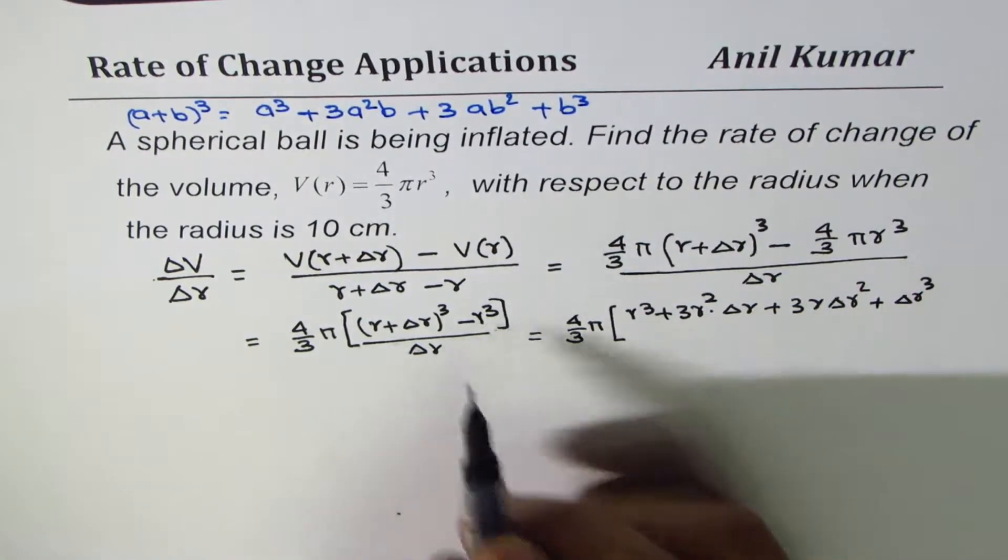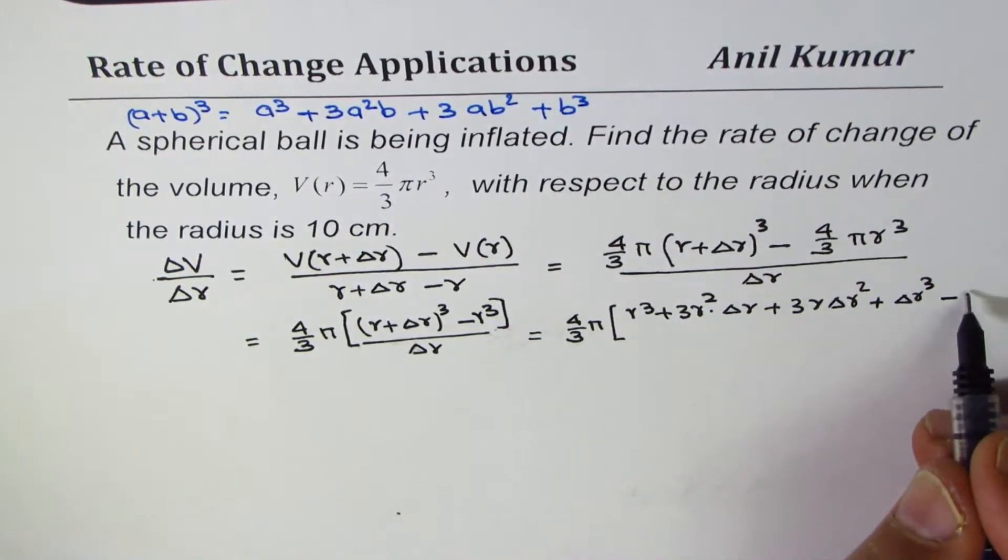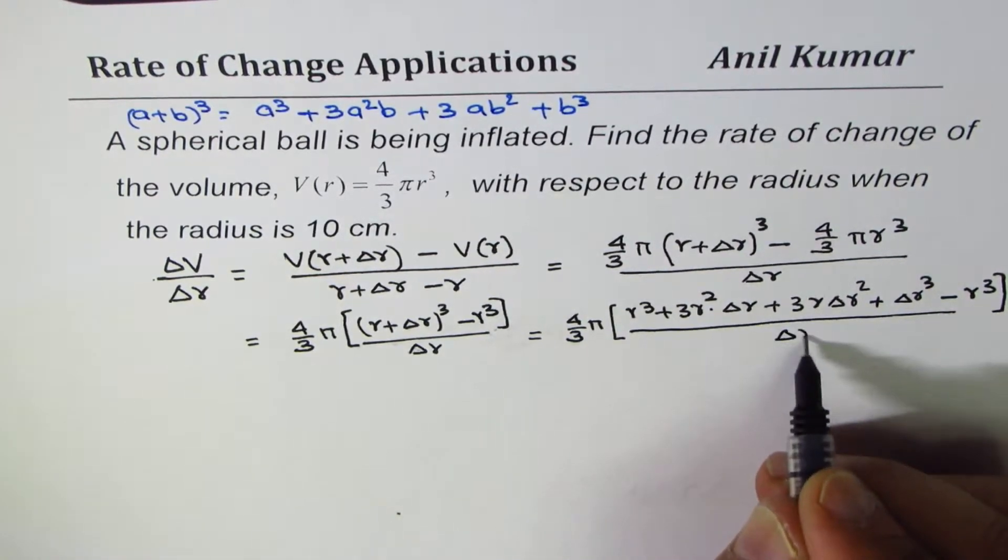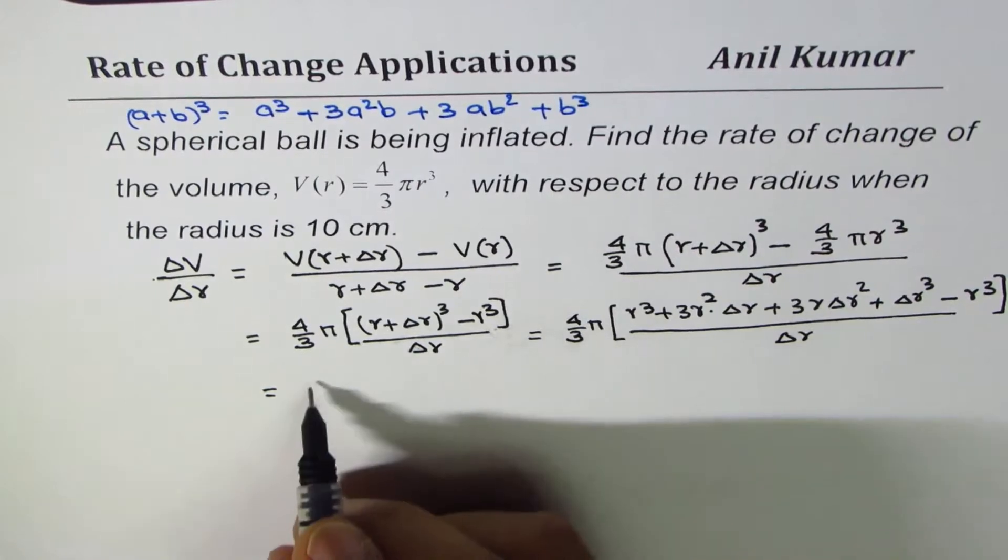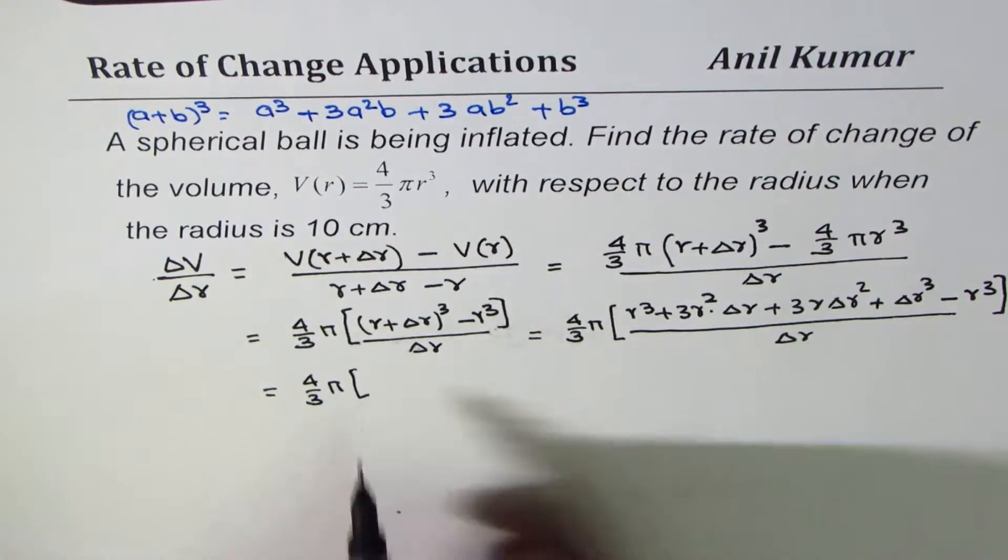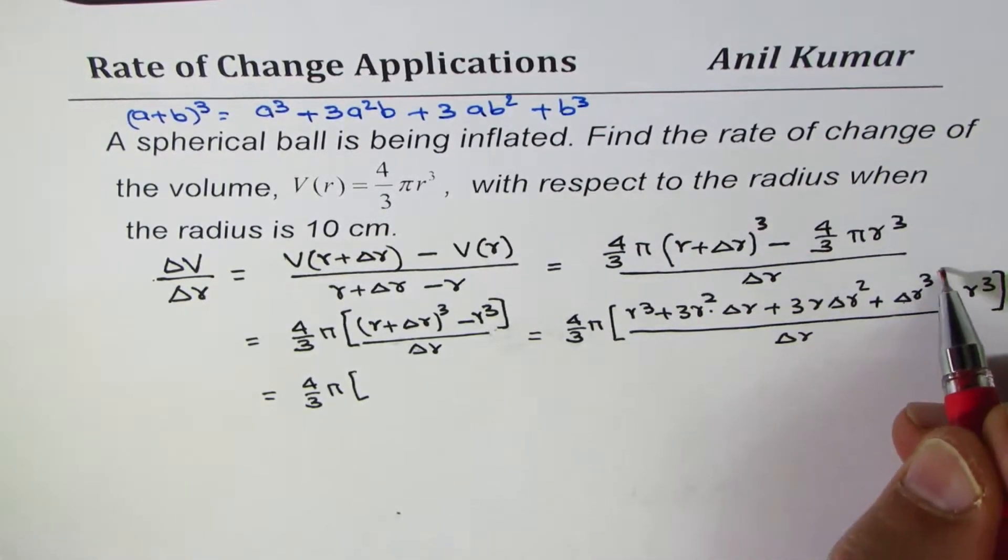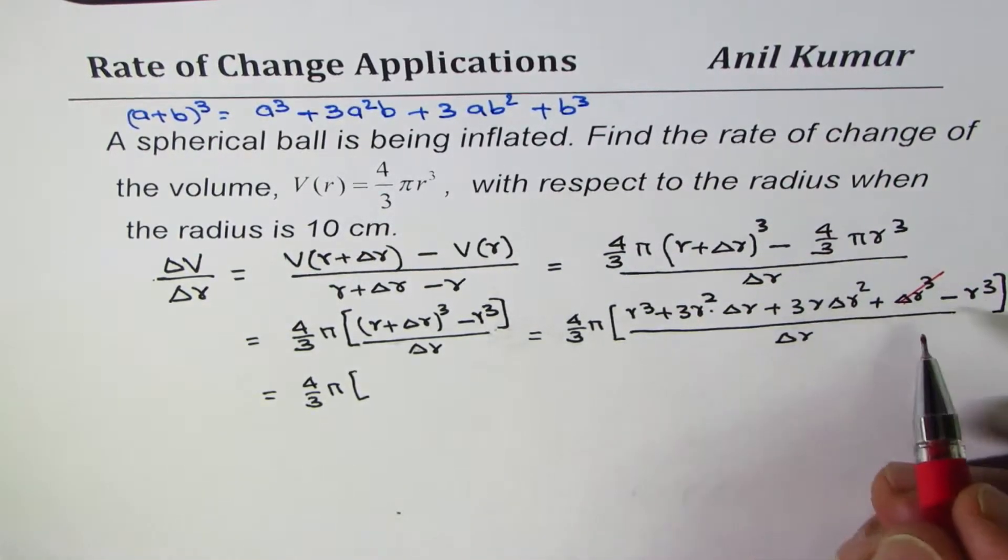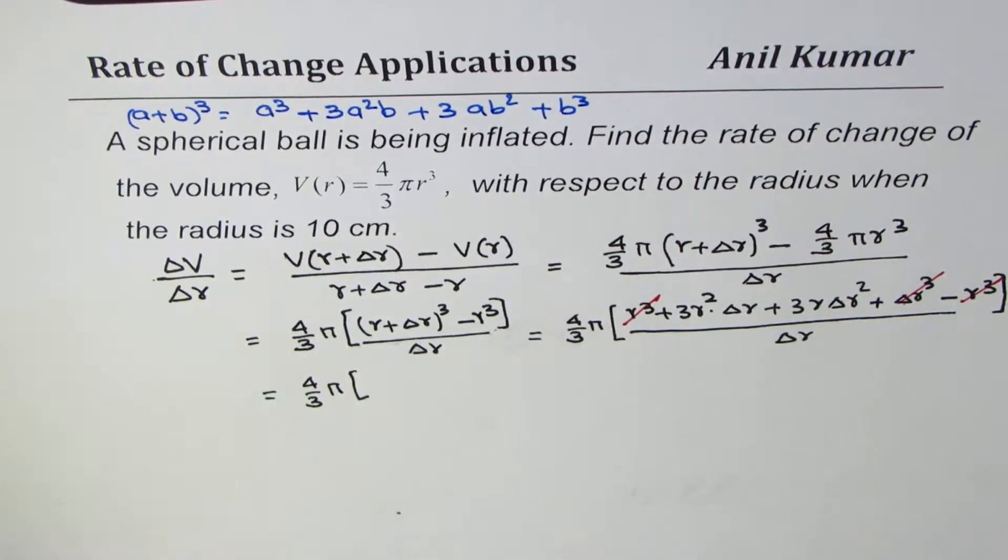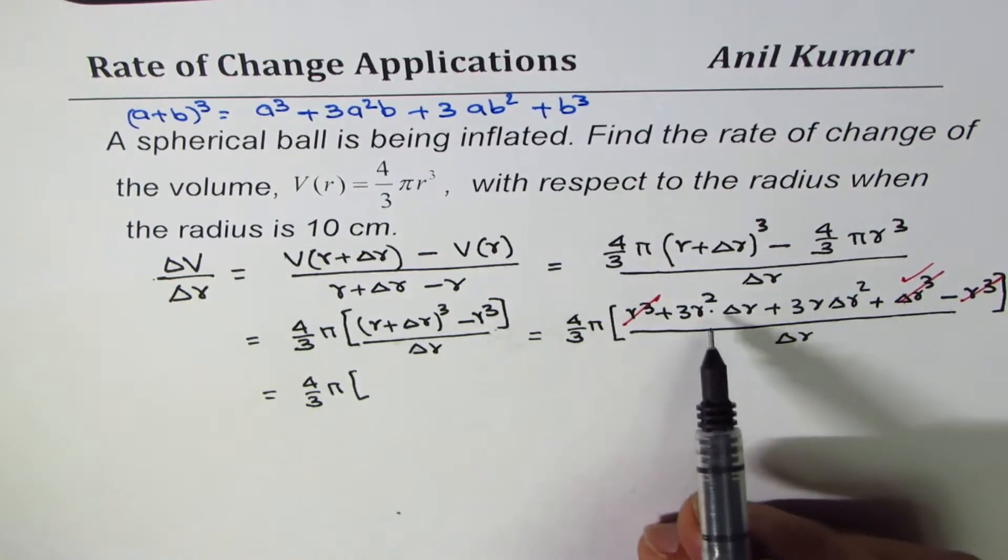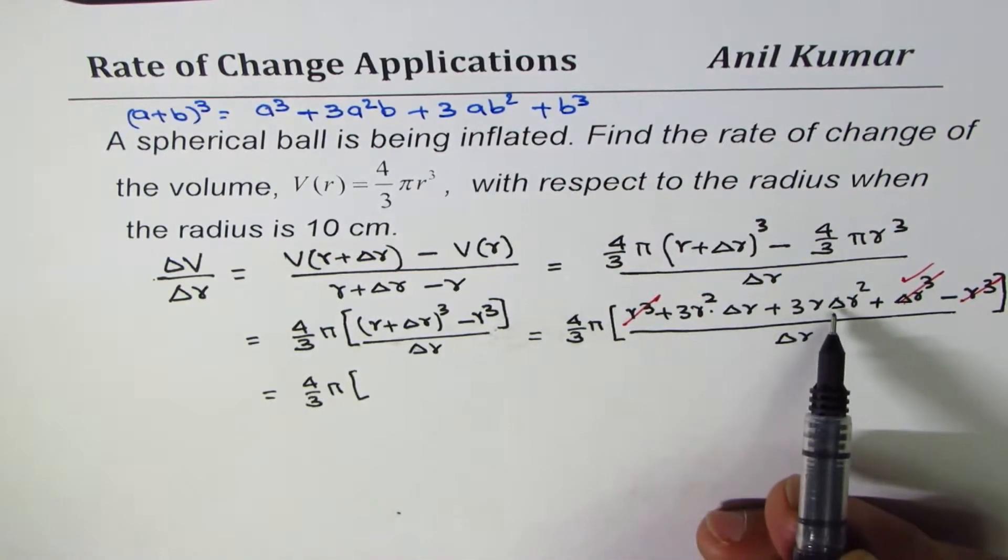So we get 4/3 π. Now the term which will cancel is R³ with minus R³.